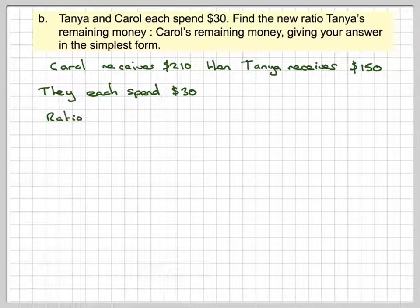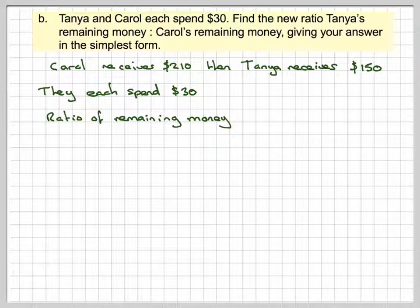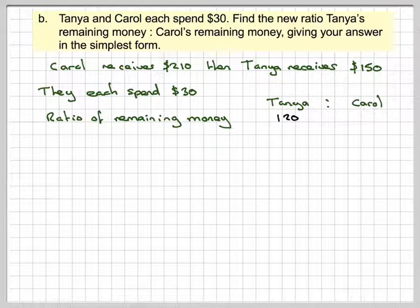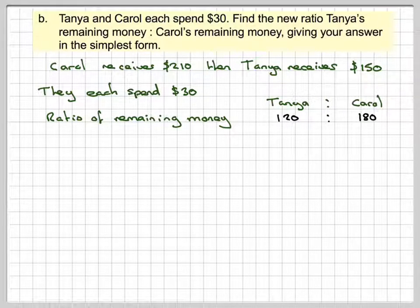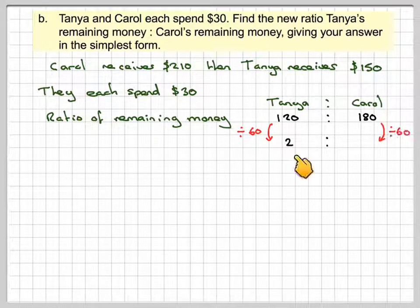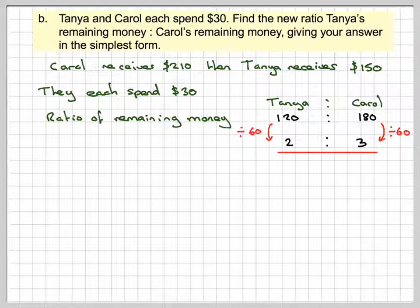They now each spend $30, so the ratio will be, we need to put Tanya's first. So it's going to be Tanya to Carol, so it will be 120, 150 minus 30, and Carol is going to be 180, which is 210 minus 30. This one you can divide by 60, which gives you 2. You can also do the same for that side, which gives a ratio of 2 to 3.